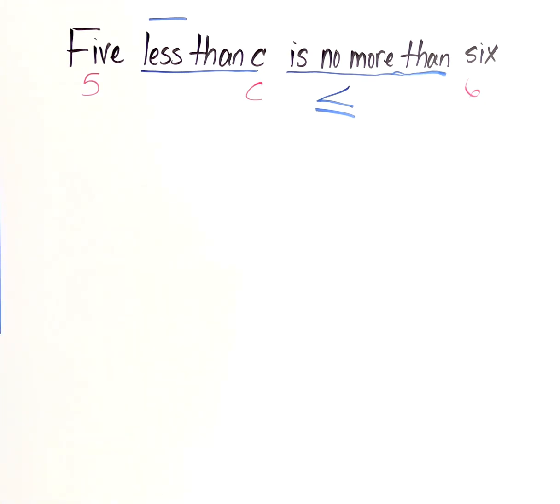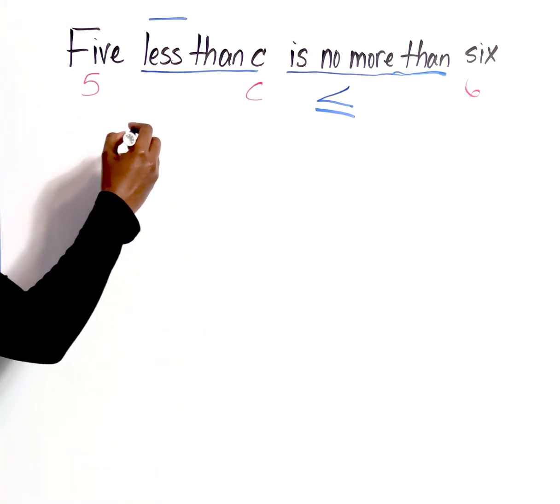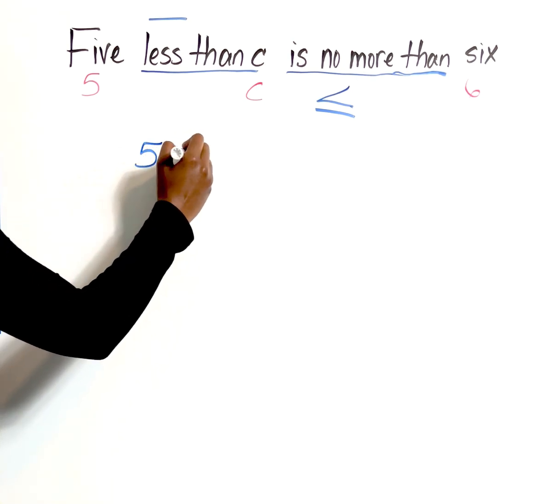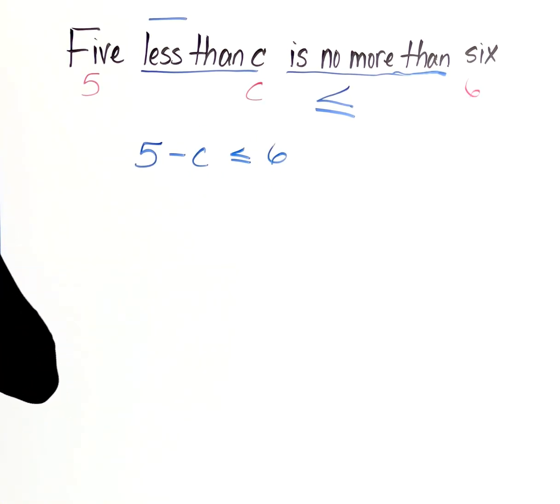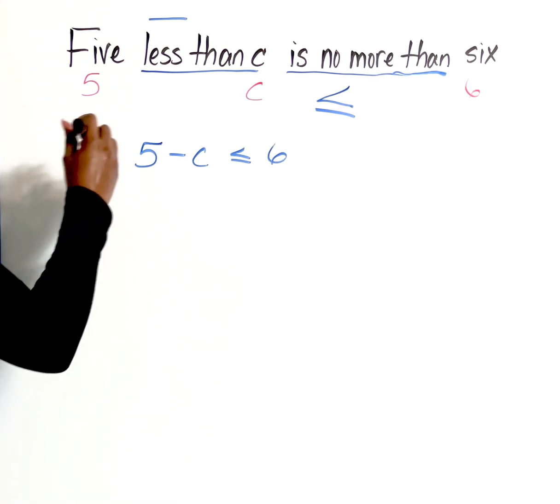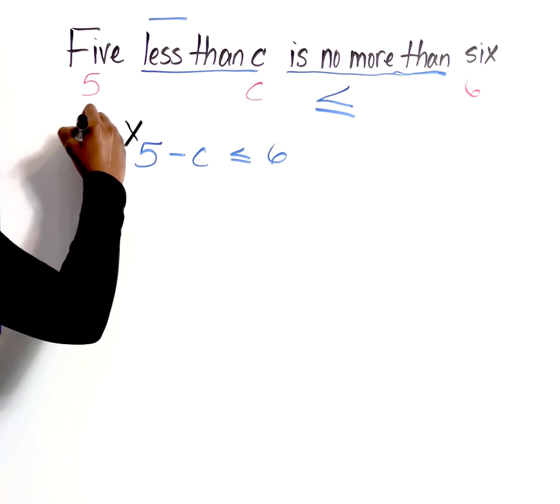Let's go ahead and bring everything down. So we have 5 minus C is less than or equal to 6. What's the problem there? And at this point, you guys have made it all the way to inequality, so you should know immediately just from seeing this what the problem is because you've been in this situation a couple times up until now. So we know that this is incorrect.